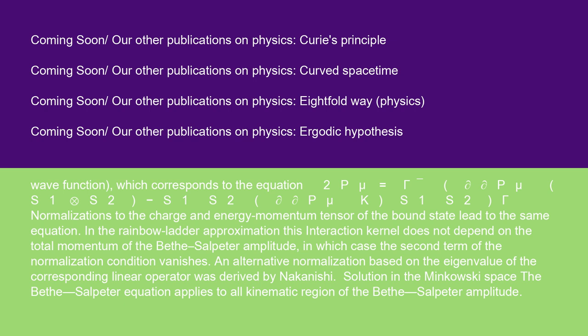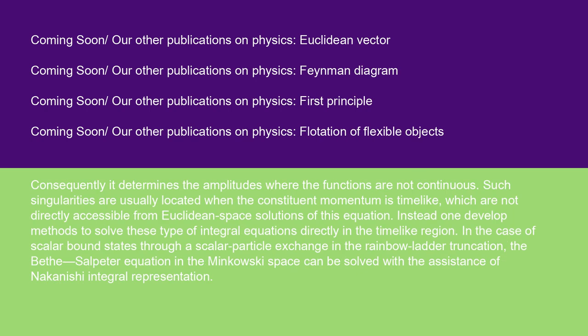Solution in the Minkowski space: the Bethe-Salpeter equation applies to all kinematic region of the Bethe-Salpeter amplitude. Consequently, it determines the amplitudes where the functions are not continuous. Such singularities are usually located when the constituent momentum is timelike, which are not directly accessible from Euclidean space solutions of this equation. Instead, one developed methods to solve these type of integral equations directly in the timelike region. In the case of scalar-bound states, through a scalar particle exchange in the rainbow ladder truncation, the Bethe-Salpeter equation in the Minkowski space can be solved with the assistance of Nakanishi integral representation.